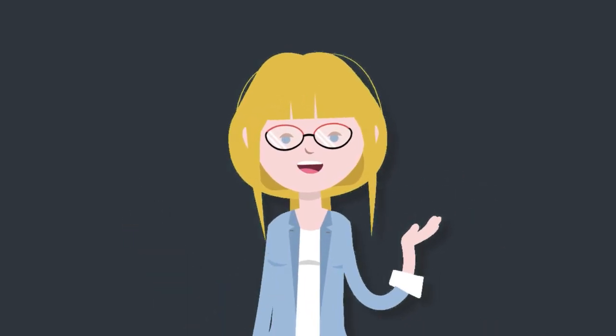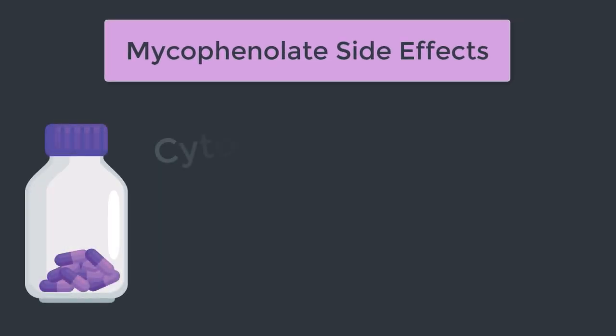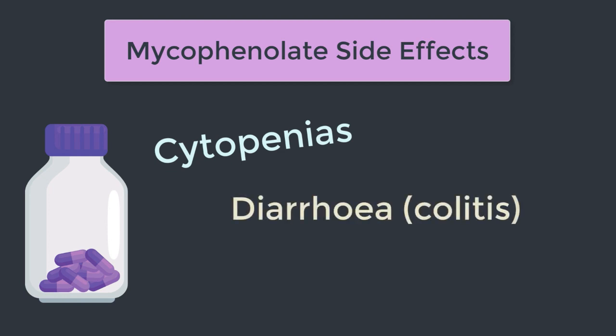Now let's highlight some side effects of mycophenolate to watch out for. The most common side effects are cytopenias, or bone marrow suppression, because of that antiproliferative effect. Another very common side effect is diarrhea — sometimes it'll settle, sometimes it will not. In a transplant or immunosuppressed patient with diarrhea, we have to think about things like CMV colitis and the usual myriad of pathogens. You'll send off stool microbiology samples and CMV PCR, and if things aren't settling you might consider a colonoscopy to fully evaluate the problem.